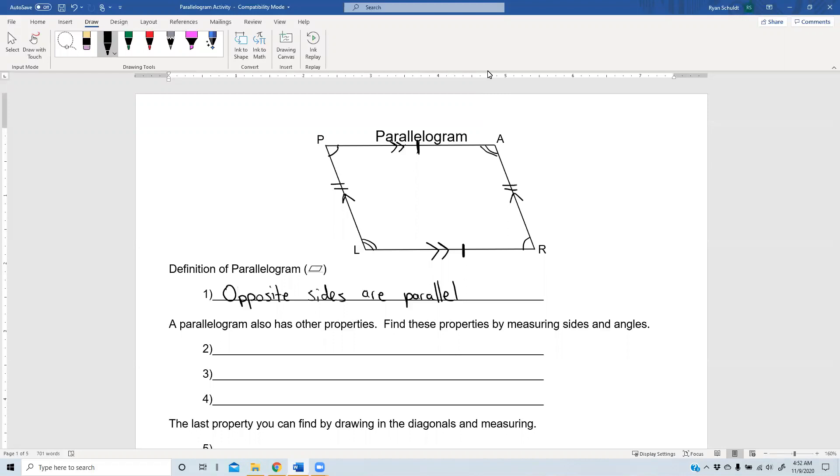So let's talk about that. We have opposite sides congruent. Remember, opposite means across from. We also have opposite angles congruent. So that's two properties we found.